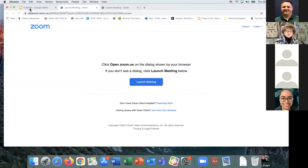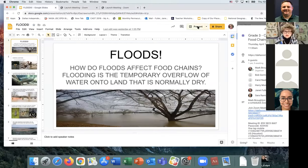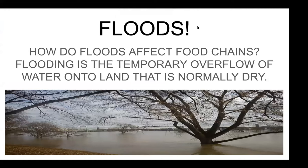Thank you again, Mr. Monroe. Now get your raincoats out because Ms. Fuller is going to tell you all about floods. Good morning, boys and girls. We are going to talk about flooding. Floods — how do floods affect food chains? What is flooding? Flooding is the temporary overflow of water onto land that is normally dry. What can cause flooding? Things like rain, snow, coastal storms, storm surges, broken levees, and broken dams — many things, both man-made and naturally caused, can cause floods. How do they affect us? How do they affect the food chain?